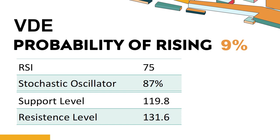Is VDE overbought or oversold according to technical data? Technical Signals and Analysis: VDE's 14-Day Relative Strength Index (RSI) value was 75. When the RSI exceeds 75, it is considered to be in the overbought region — the stock price may be overvalued, and a price correction may be required. It means that the stock price has been experiencing a strong uptrend and has risen too fast, causing the RSI to reach a high level. The current stochastic oscillator of VDE is 87%.